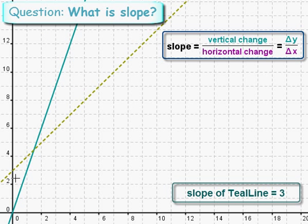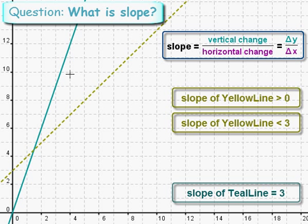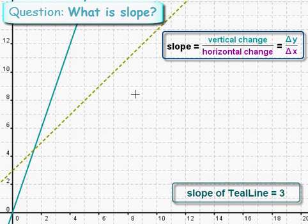Okay, now let's look at another line, the yellow line. Now yellow line is increasing, going up from left to right, so its slope will be positive. But it's not increasing as fast as teal line. Teal line had a slope of 3, so this must have a positive slope but less than 3. Let's pick a couple of points on the grid here.